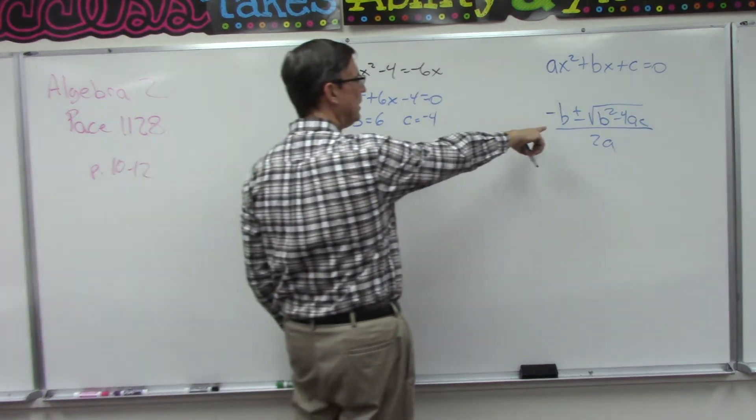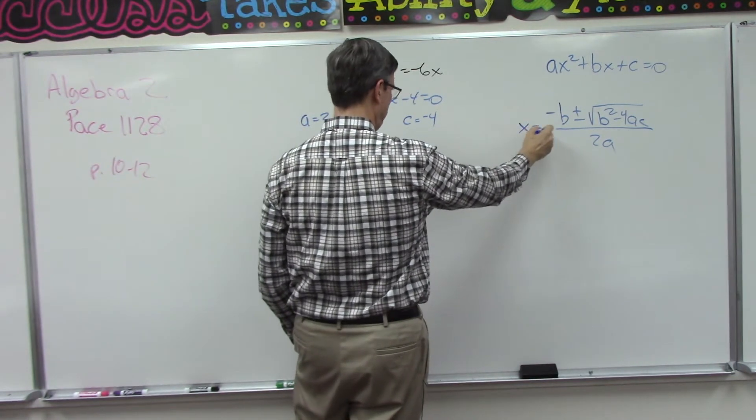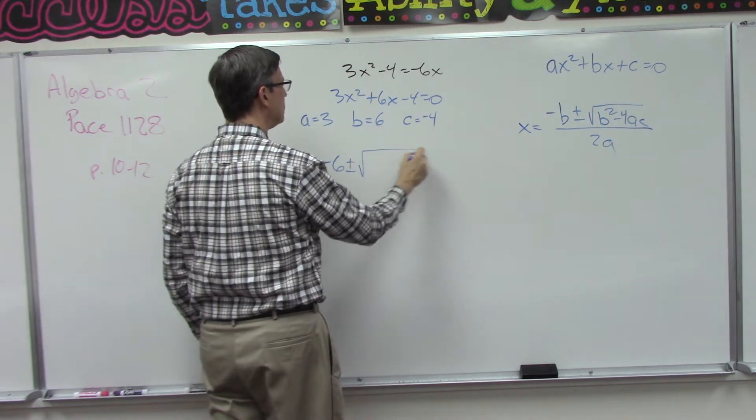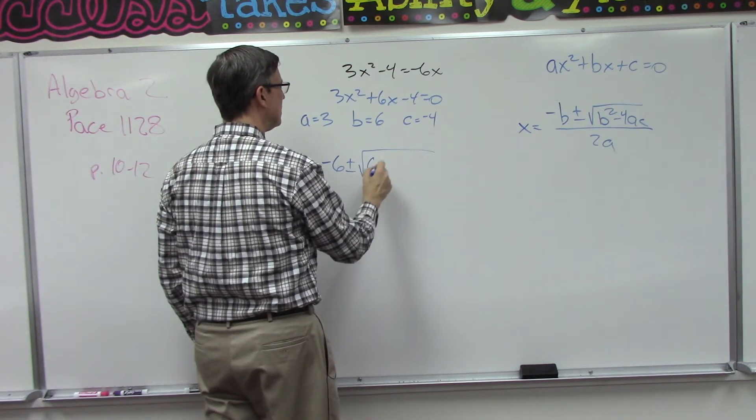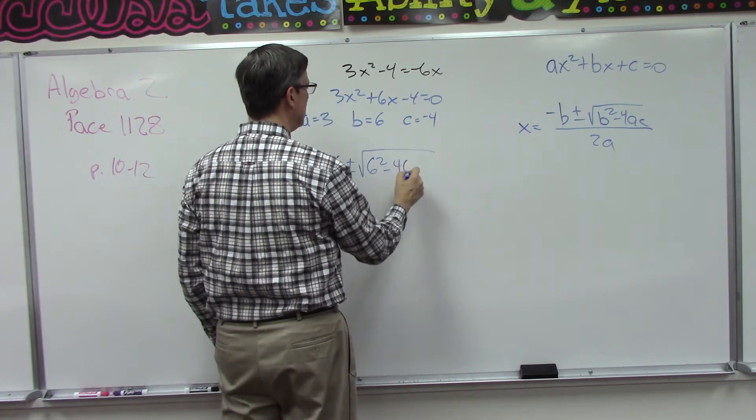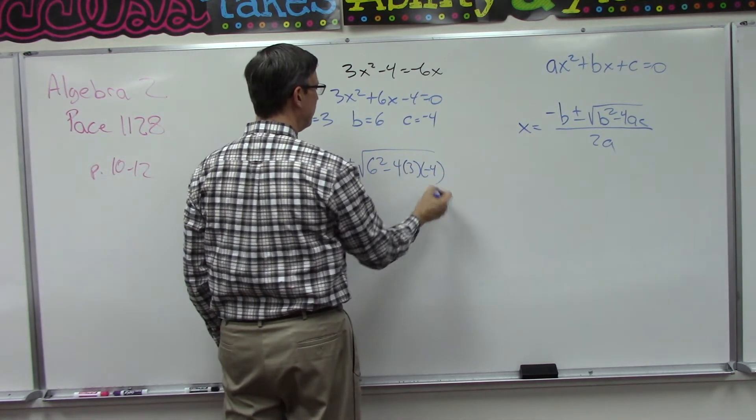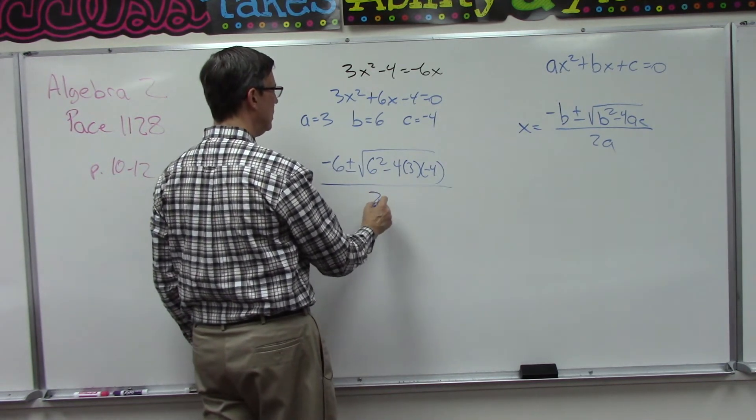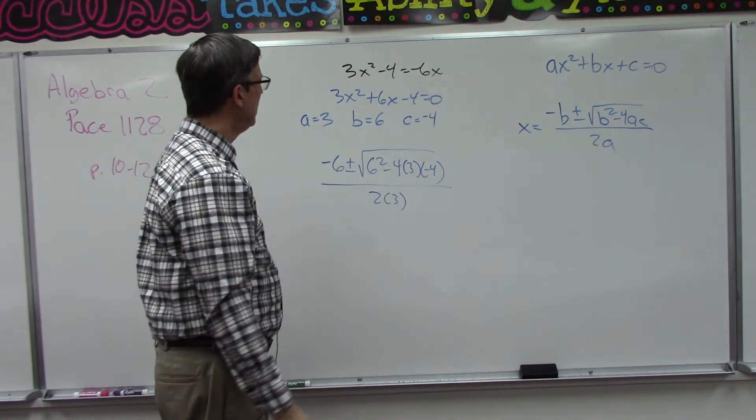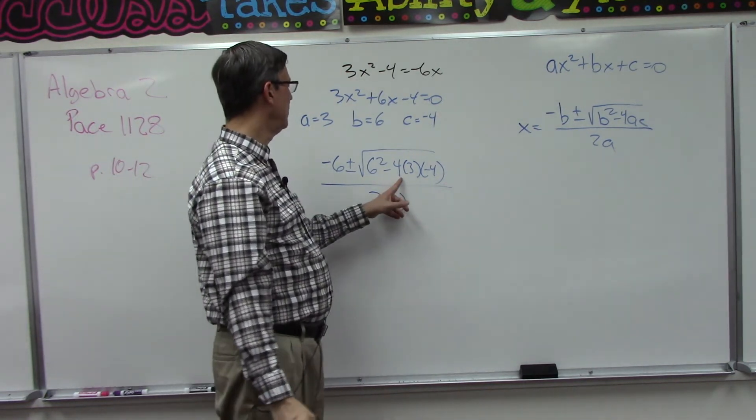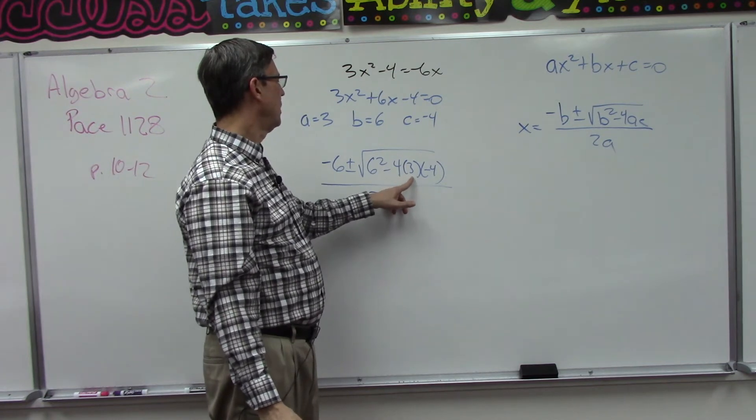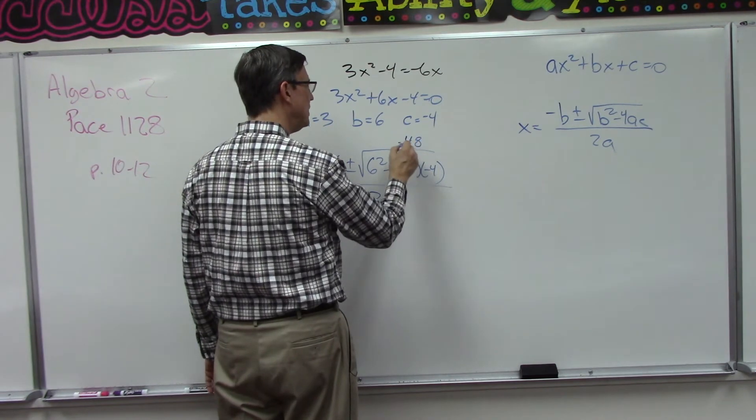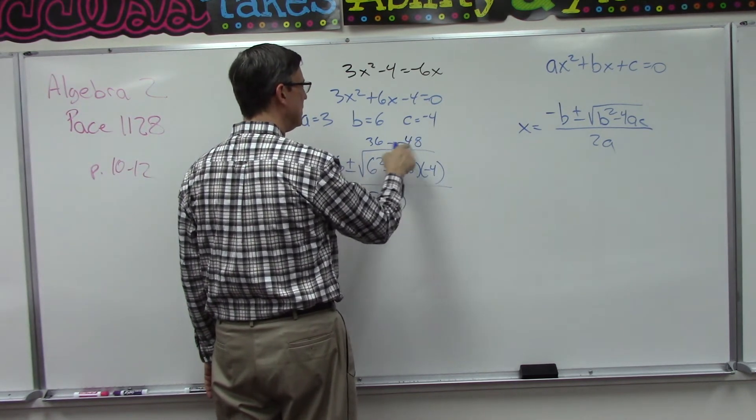Now let's take our template here, our formula, and we're going to plug in. So negative 6 plus or minus the square root of 6 squared minus 4 times 3 times negative 4 all over 2 times a. Now let's see here. What is 4 times 3 is 12, 12 times 4 is 48.